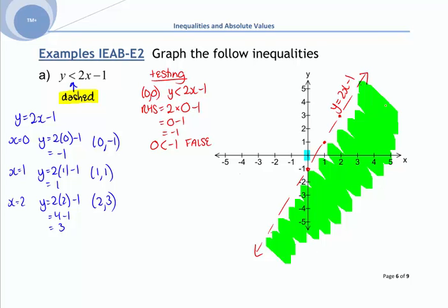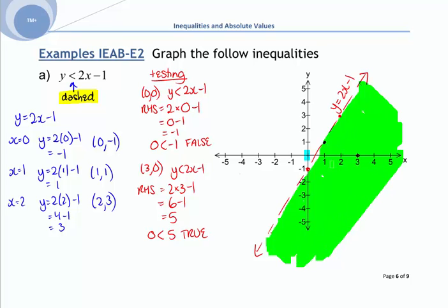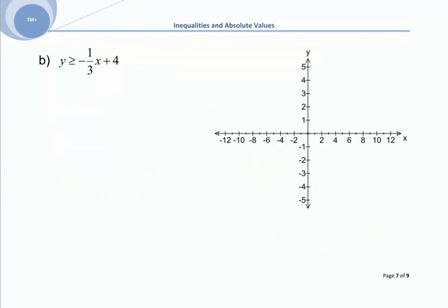Since (0, 0) doesn't satisfy the inequality, the other side of the line must be the region we need. Let's confirm by testing point (3, 0): the right-hand side is 2(3) - 1 = 5, so 0 < 5, which is true. So all coordinates on that side satisfy the inequality — that side of the line is the region y < 2x - 1.